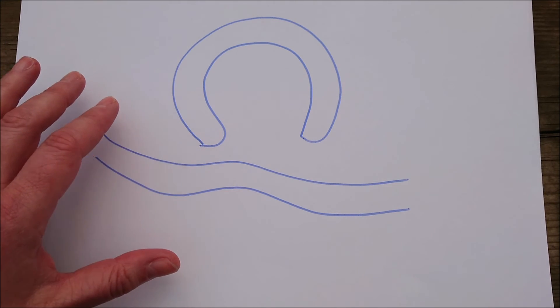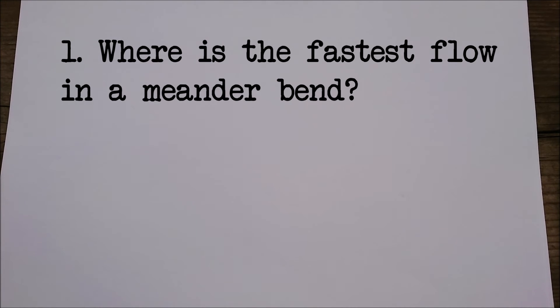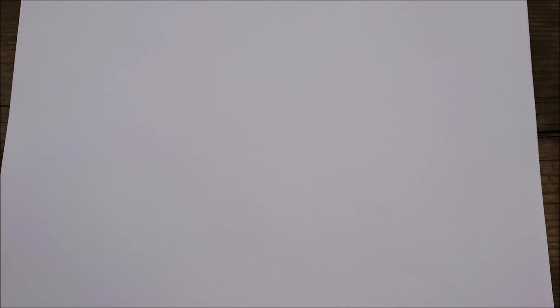Question one: Where's the fastest flow in a meander bend? The fastest flow in a meander bend is on the outside.